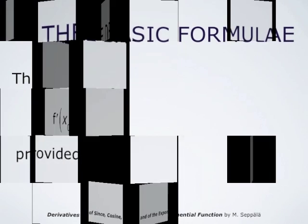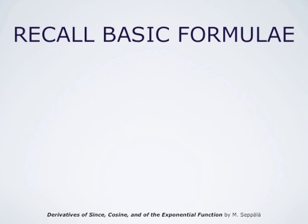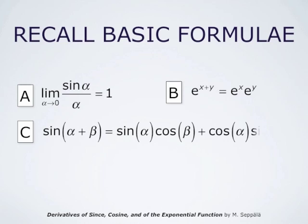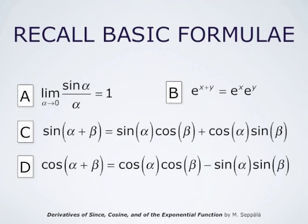We recall some basic formulas. First, the limit of sine of alpha divided by alpha as alpha goes to 0 is 1. Secondly, e to the x plus y equals e to the x times e to the y for all numbers x and y. The addition formula for sine: sine(α + β) = sin α cos β + cos α sin β. Similarly, cosine(α + β) = cos α cos β − sin α sin β.